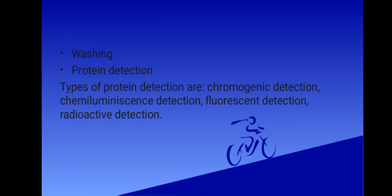Then we have washing. In this step we find that the unbound antibodies can cause high background and poor detection. Therefore, washing the blot removes unbound antibodies from the membrane. A dilute solution of Tween 20 in TBS or PBS buffer is commonly used for washing to reduce the high background or poor detection that is caused by the unbound antibodies.